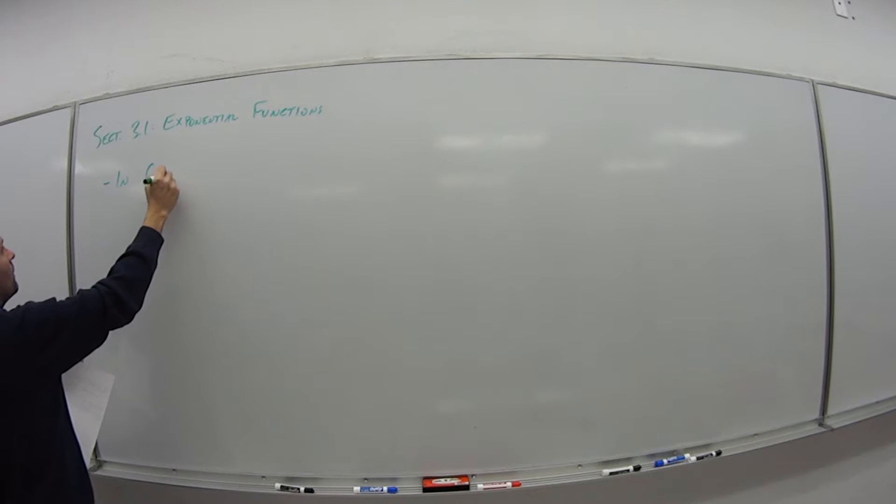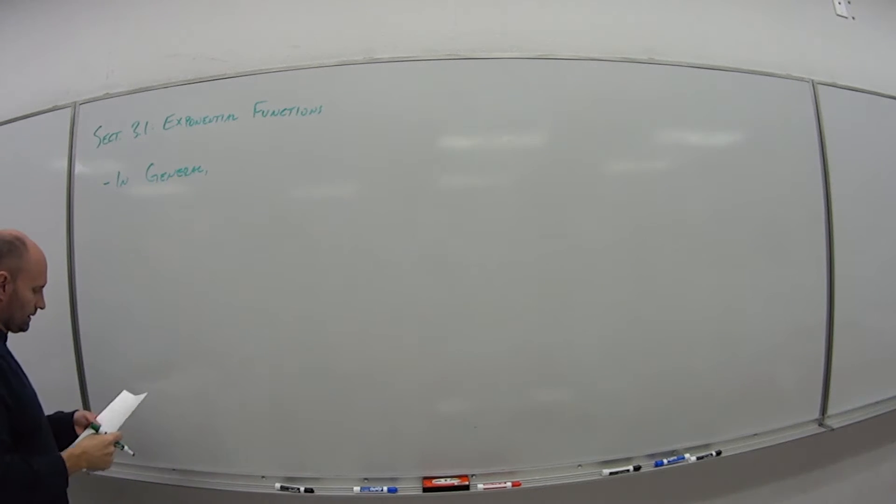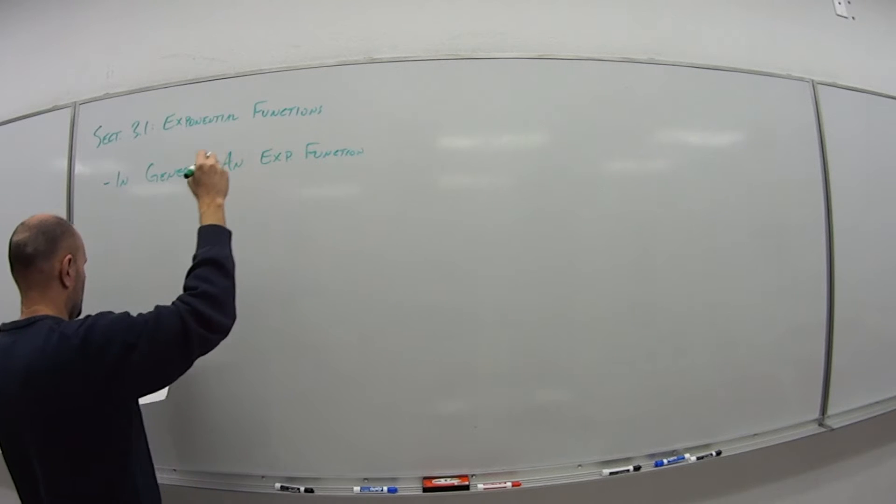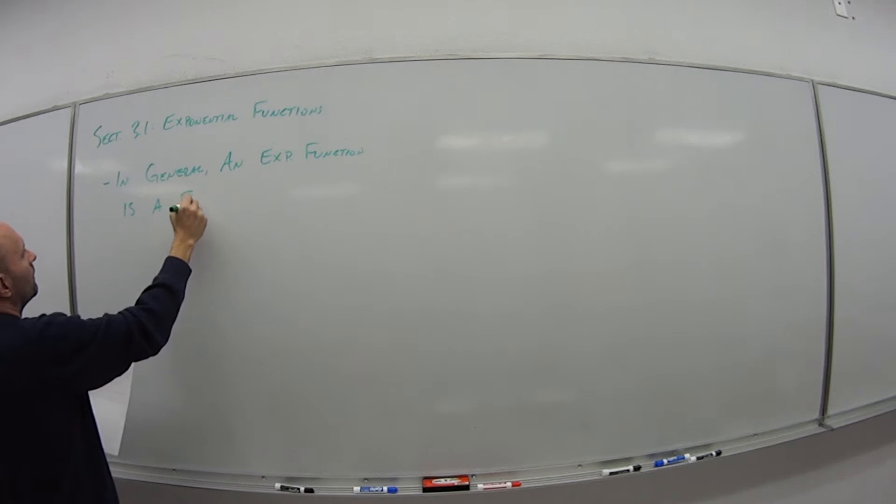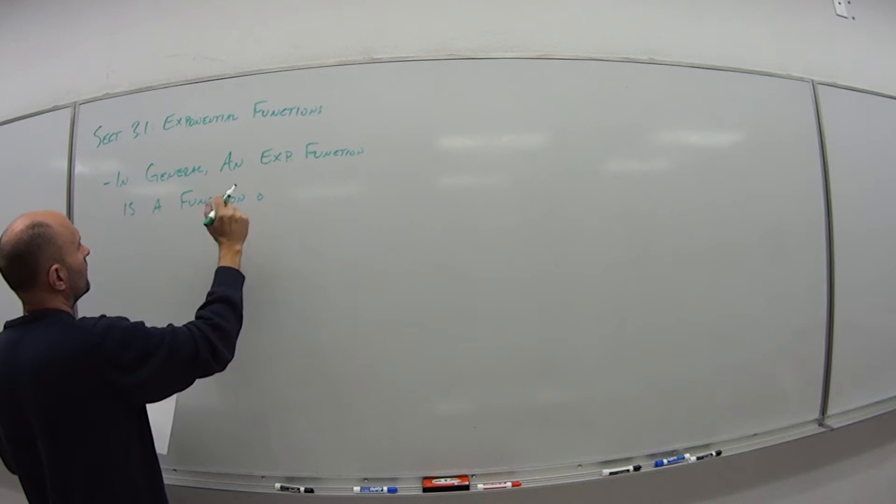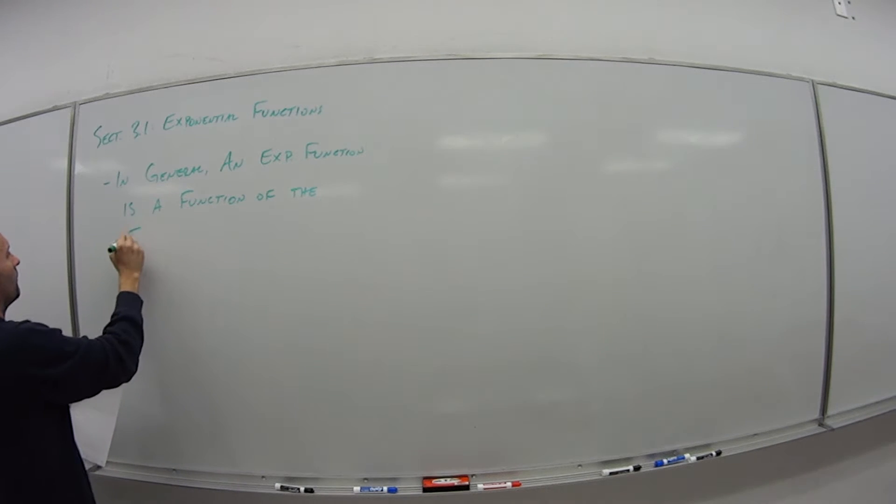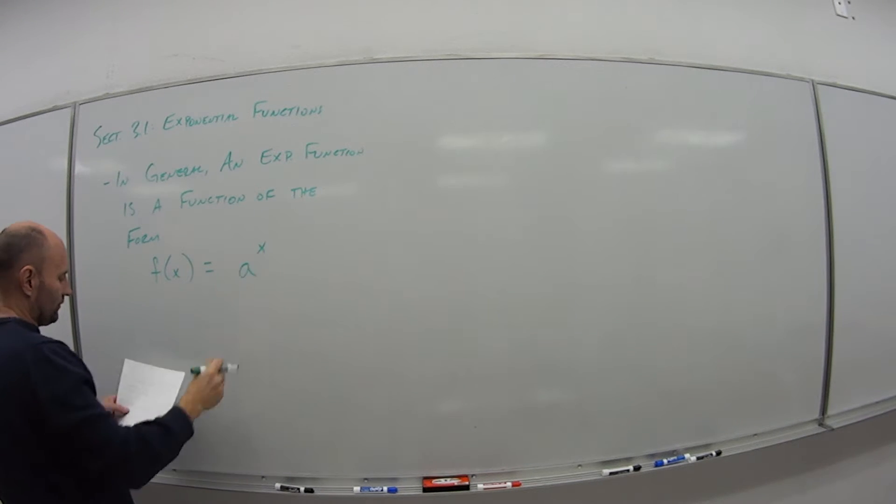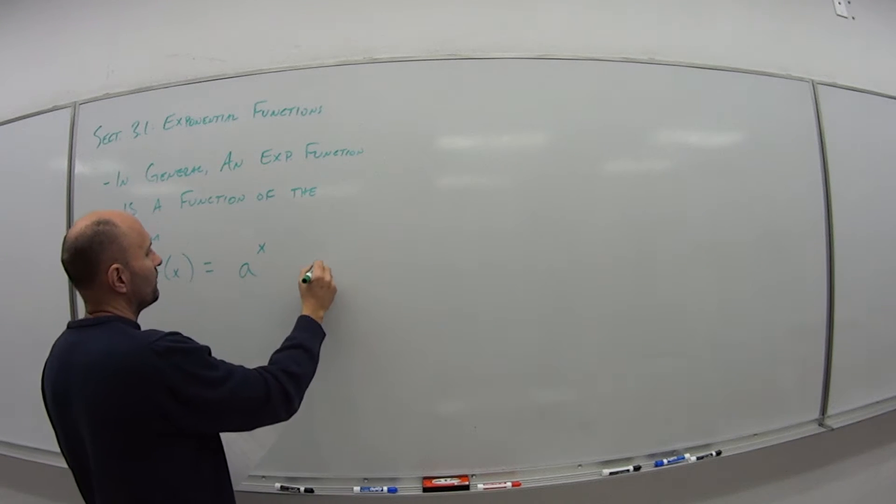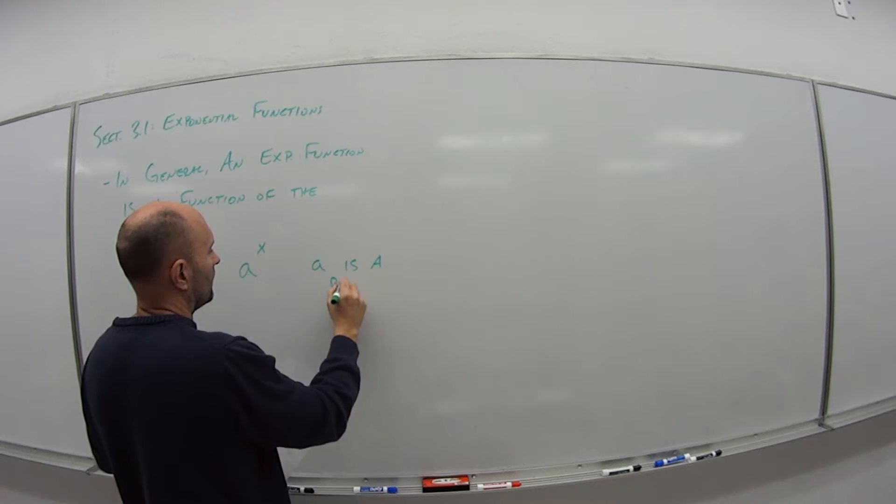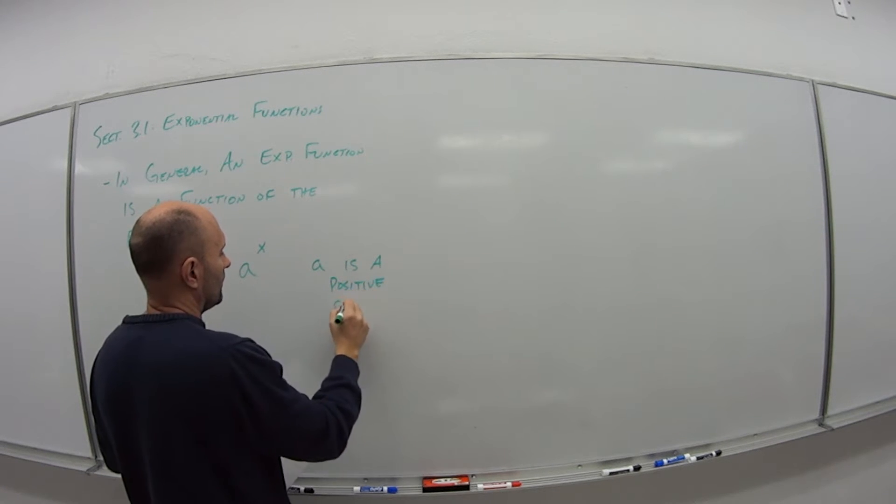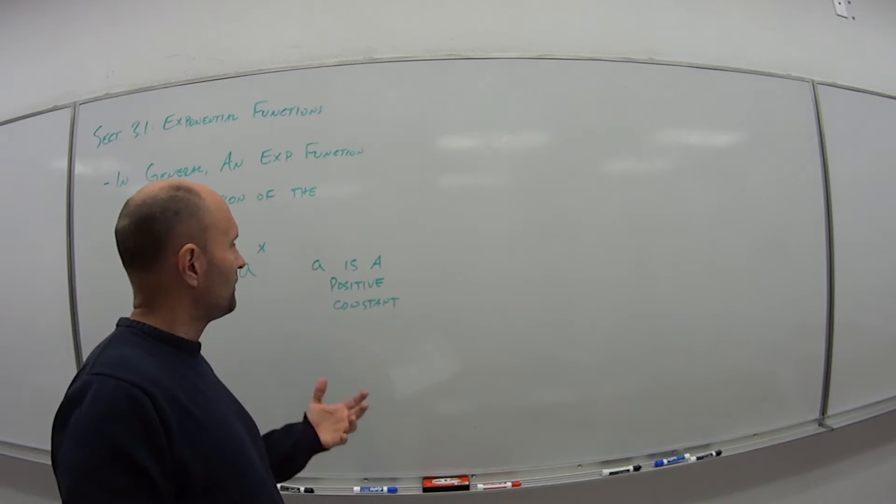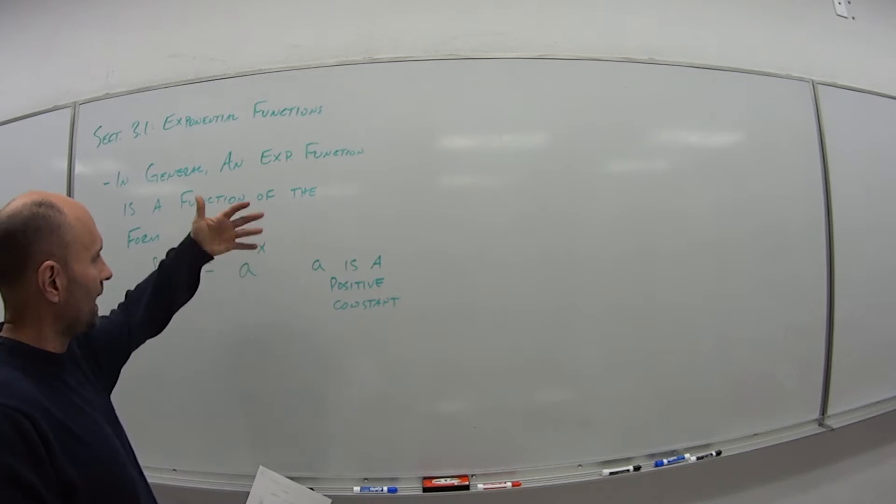So in general, an exponential function is a function of the form f(x) equals a to some exponent x, where a is a positive constant. So generally speaking, if we're talking about an exponential function, we're talking about some value raised to a power x or a function of x.